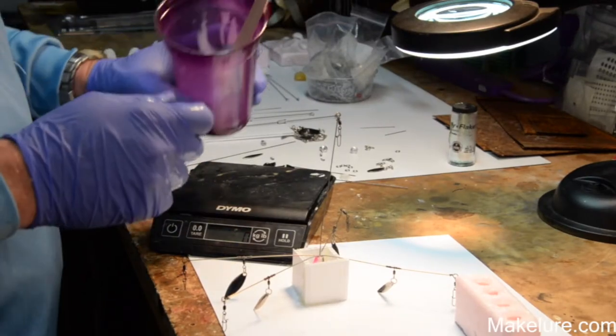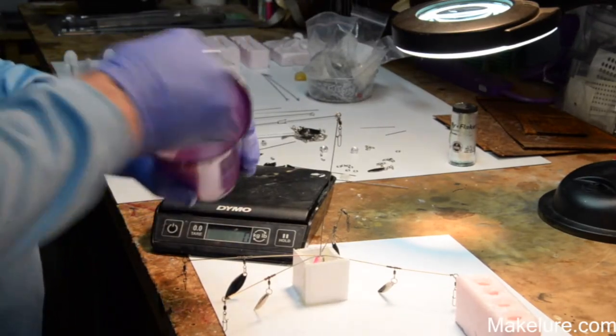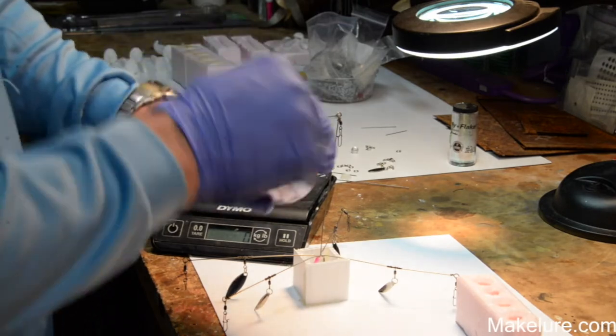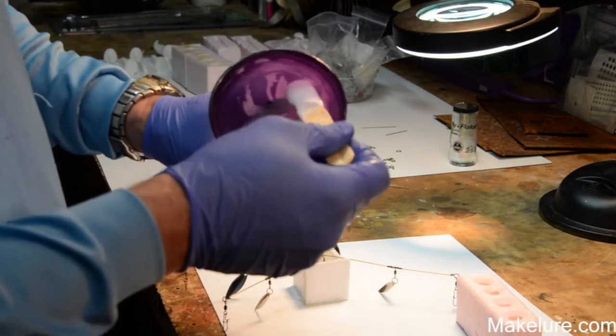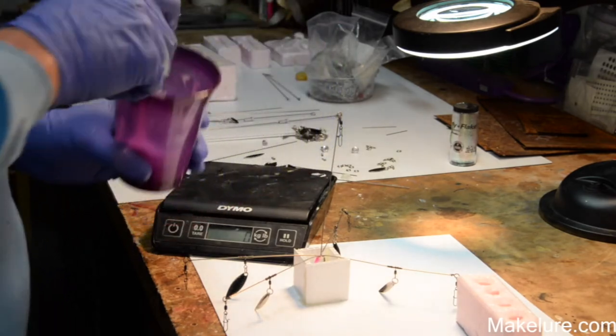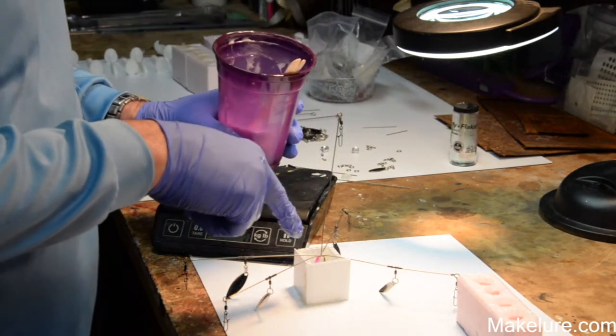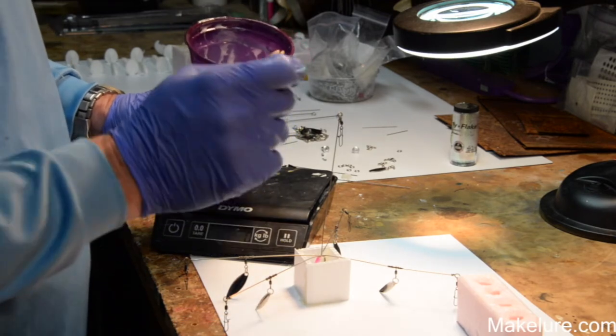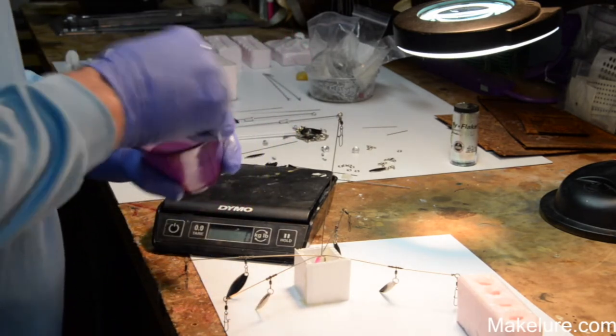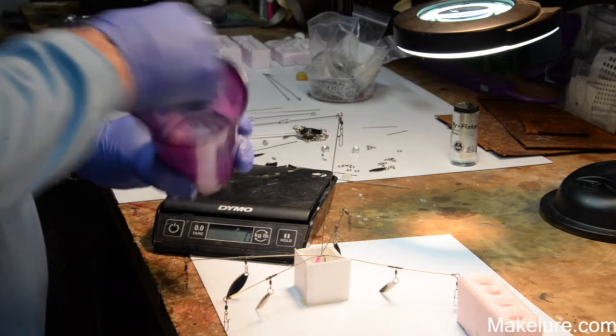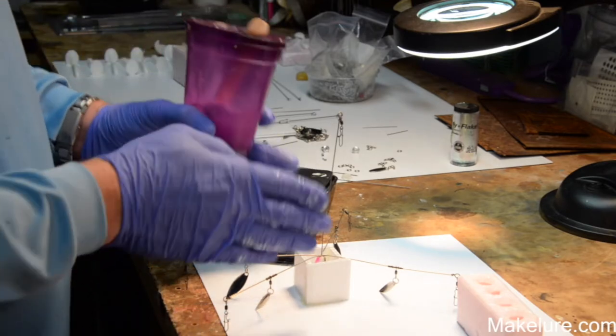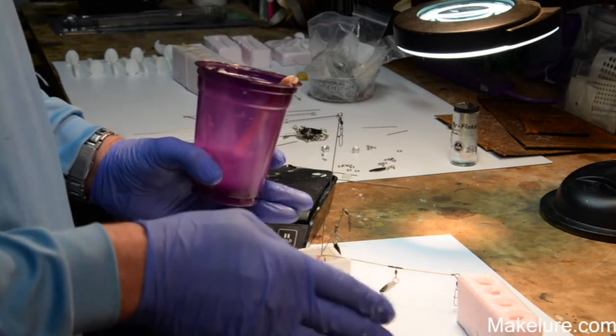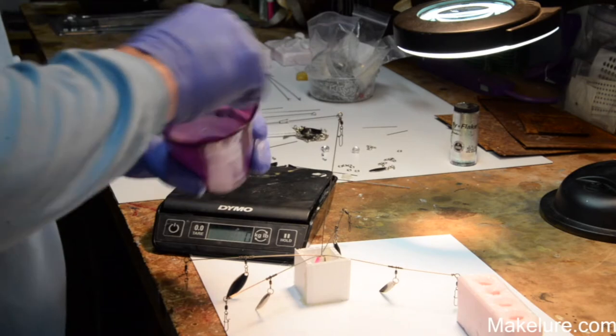So we've mixed up the high strength two and the catalyst at a 10 to 1 ratio, the catalyst being the one, and we've mixed this up with a big tongue depressor. We're going to pour this in here and we're going to spray it with UMR mold release so it pops out really easy tomorrow. Then again we'll start making molds of this and we'll make a larger box so we'll have a gang mold of four or five tomorrow.